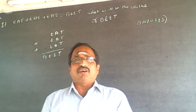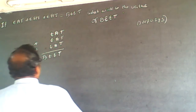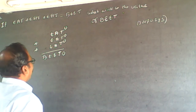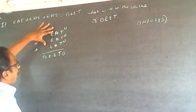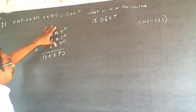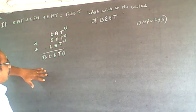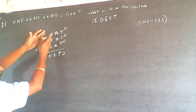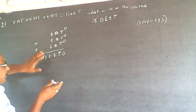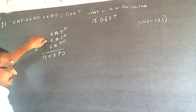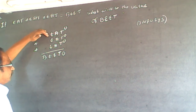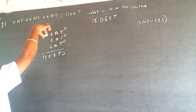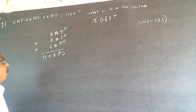T can only be 0 or 5. First I will check with T=0. So if T is 0, all three units digits become 0. Now, since we are adding three 3-digit numbers and getting a 4-digit number, there must be a carry-over. That means E has to be at least 3 or above.